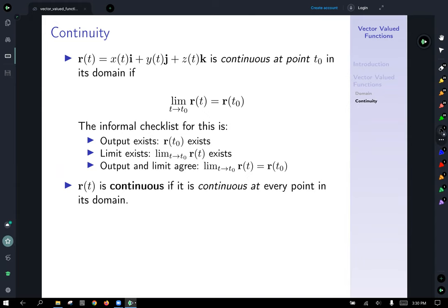The informal checklist for continuity is the output exists. It's not continuous if our function doesn't exist at t zero. The limit exists. The limit as t goes to t zero of r of t has to exist. And then the third thing is that the output and the limit agree. The limit is equal to some value, and that value is the function evaluated at that point. The function is said to be continuous if it is continuous at every single point in its domain. These are all concepts we've seen before in single variable calculus.